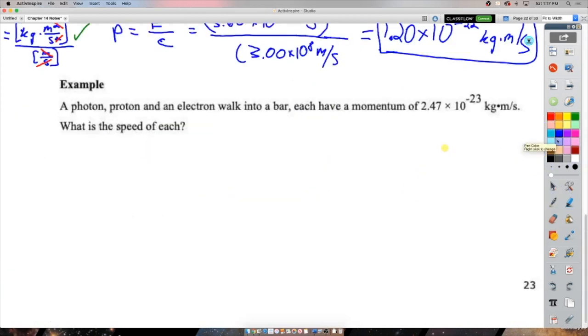A photon, a proton, and an electron walk into a bar. Each have a momentum of 2.47 times 10 to the negative 23 kilogram meters per second. What is the speed of each? So this example drives home that you cannot use p equals h over lambda for particles. Remember that step we took in the derivation assumed that this object was traveling at the speed of light. Electrons and protons cannot, ever. They have a mass.